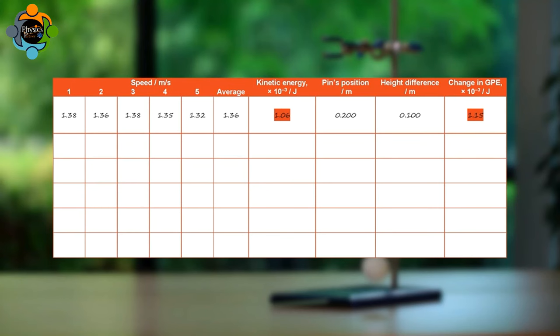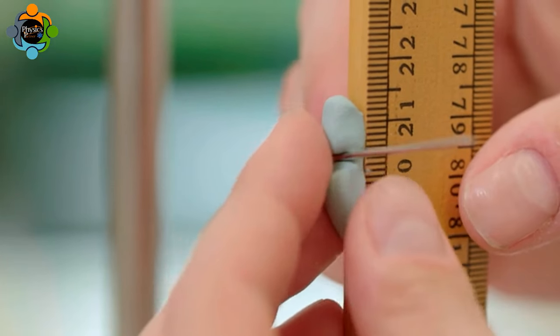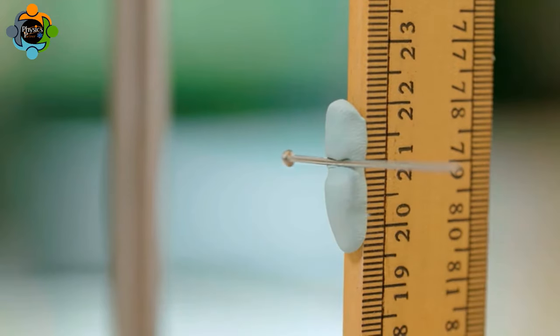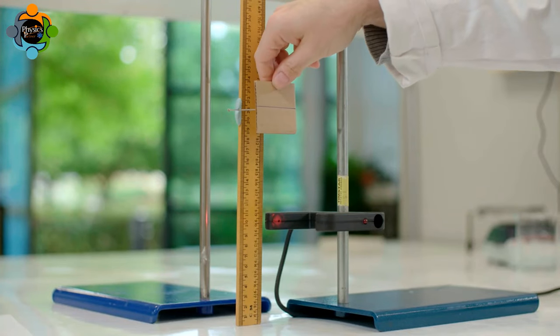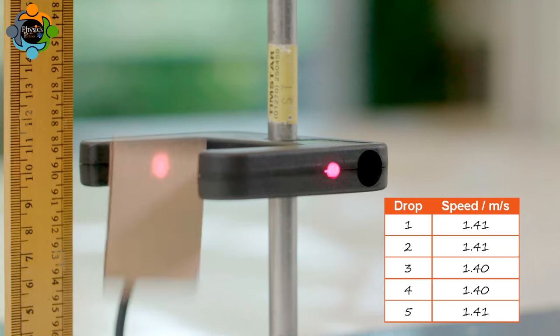The height of the pin is increased by 0.01 meters or one centimeter, and the card is dropped from this new height five times. This is repeated for each additional height increase of the pin.